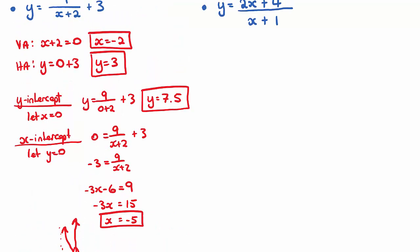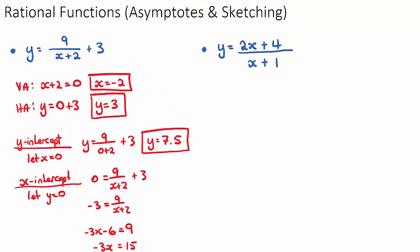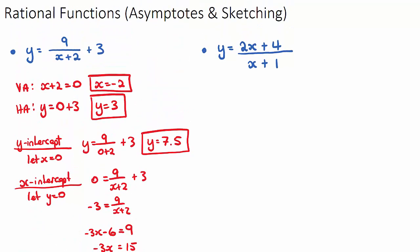For the second example, we find the vertical asymptote by setting the denominator equal to zero: X plus 1 equals 0, so X equals negative 1.